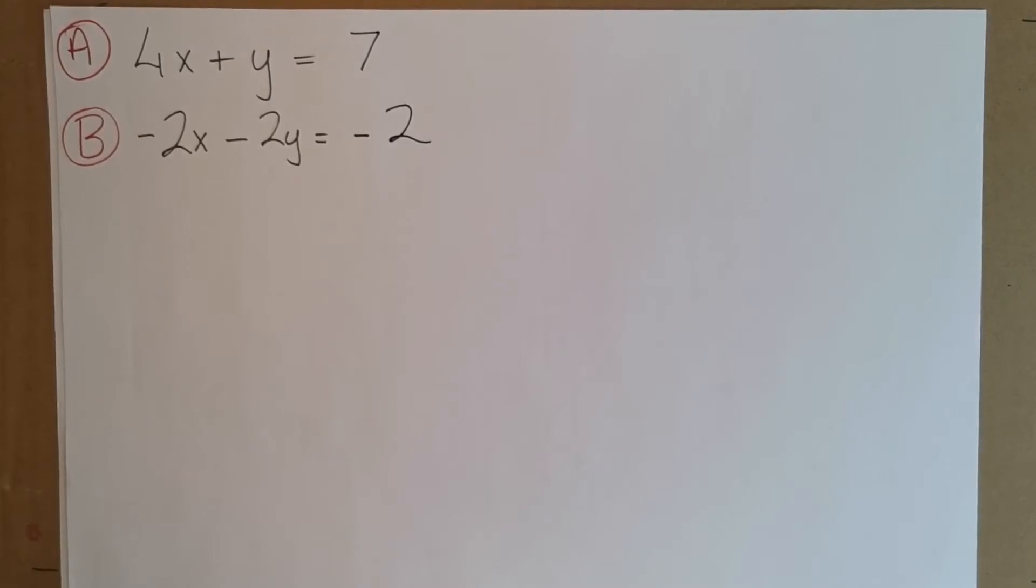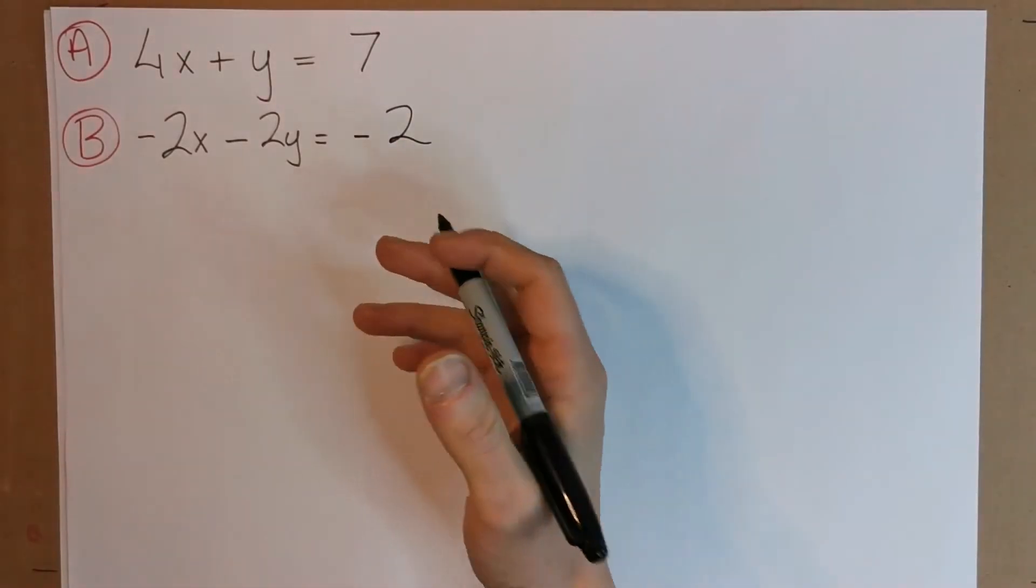Here's another method for solving simultaneous equations, and we call this substitution method. This is a method that's needed to solve the ones with squares, like quadratic ones, when you have like an x squared and y squared. But let me just show you first how we use it on a linear equation, similar to method 1.